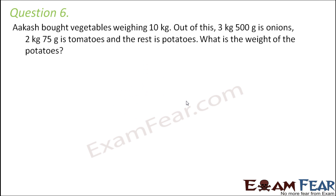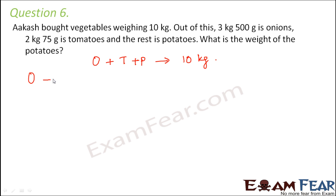Question number 6: Akash bought vegetables weighing 10 kg. Of this, 3 kg 500 grams is onions, 2 kg 75 grams is tomatoes, and the rest is potatoes. What is the weight of the potatoes? He bought onions, tomatoes, and potatoes with a total weight of 10 kg. Let's convert the onion weight into kilograms.